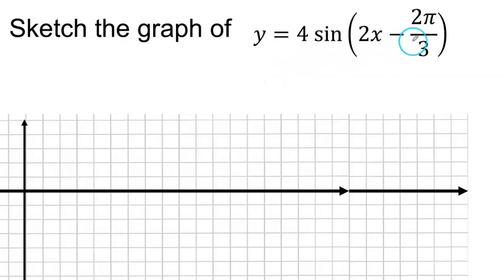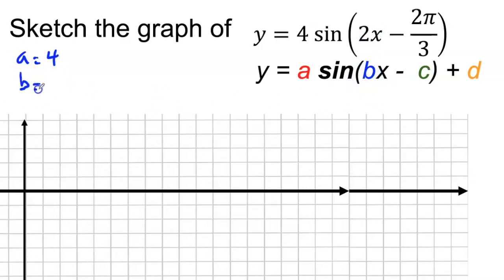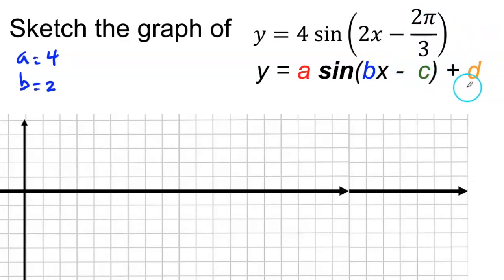The first graph we're going to do is y equals 4 sine of (2x minus 2π over 3). I need to bring my general equation for the sine function, where A is my amplitude — A equals 4, B is 2 which is my frequency, C is negative 2π over 3, and D is nothing. Remember, C is horizontal movement and D is vertical movement.